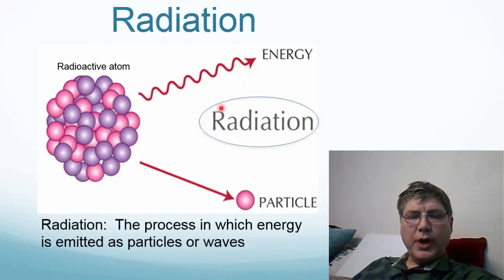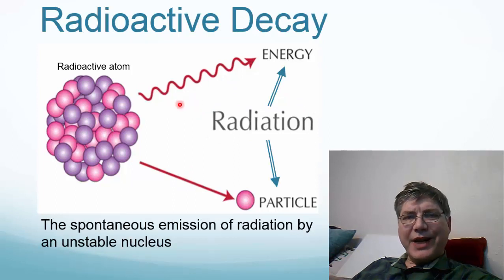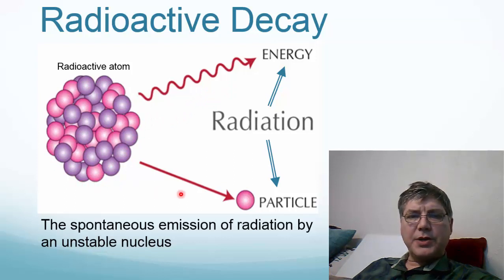Radiation is what we collectively call these particles or energy. In particular, we call it nuclear radiation. Radioactive decay is the process that happens when an unstable nucleus spontaneously emits some of this radiation, either in the form of a particle or a ray.